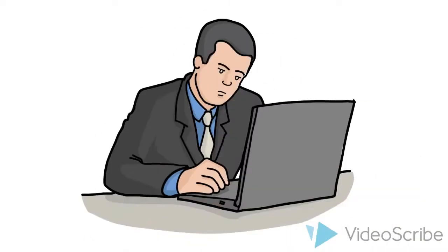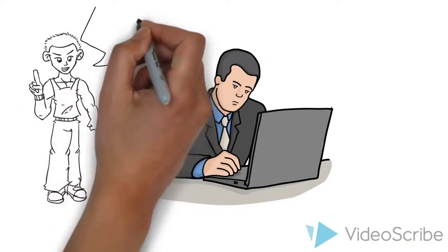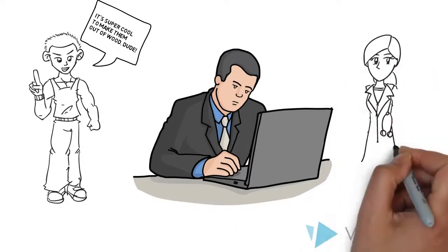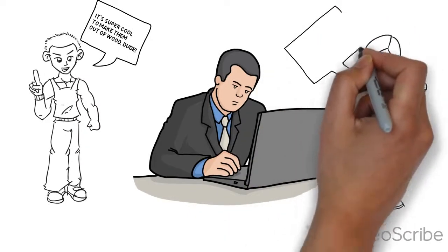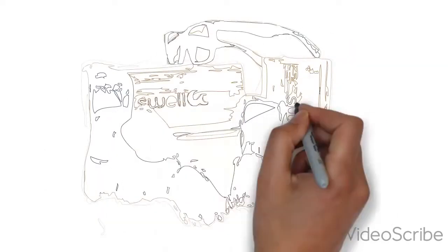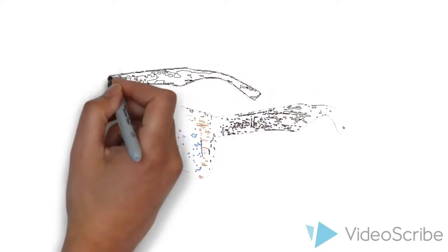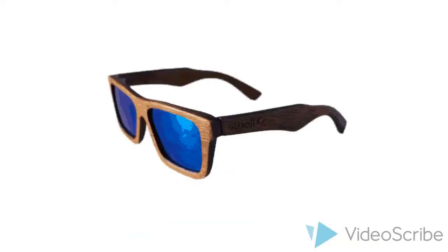I did some research and I realized that wooden sunglasses were starting to become trendy. And when I did research into manufacturing, I realized that you can make them out of bamboo. Not only was bamboo cheaper to use than other hardwoods, but I think it looks a lot better as well.